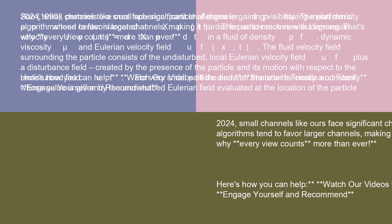The disturbance field is created by the presence of the particle and its motion with respect to the undisturbed field uf. For very small particle diameter, the latter is locally a constant whose value is given by the undisturbed Eulerian field evaluated at the location of the particle center: uf(t) equals uf(xp(t), t).